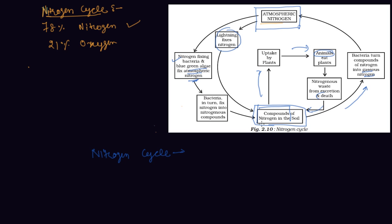These compounds of Nitrogen can be utilized by plants from the soil. When plants and animals die, bacteria and fungi present in the soil convert the nitrogenous waste from the excretion of plants and animals. Certain other bacteria convert some part of these into Nitrogen gas, which goes back into the atmosphere, and then this cycle goes on repeating.